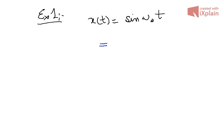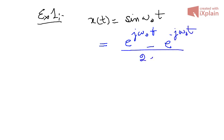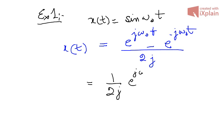A very straightforward method: using Euler's identity you can write sin(ω₀t) as [e^(jω₀t) − e^(−jω₀t)] / 2j. Using the expressions derived in the previous video, you can write sin(ω₀t) as (1/2j)e^(jω₀t) − (1/2j)e^(−jω₀t).